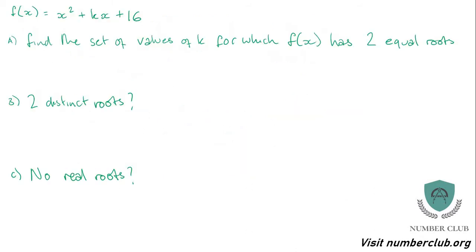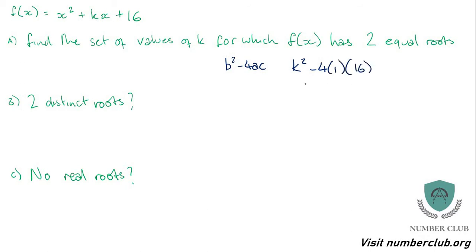This question asks: find the set of values of K for which f of x has two equal roots, two distinct roots, or no real roots. All three parts start the same way — you find your discriminant. Whenever a question mentions two equal roots, two distinct roots, or no real roots, think discriminant straight away. So b squared minus 4ac: in this case b is K, so we get K squared minus 4 times 1 times 16, which gives K squared minus 64.